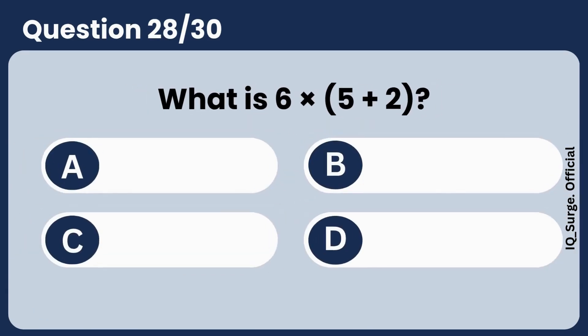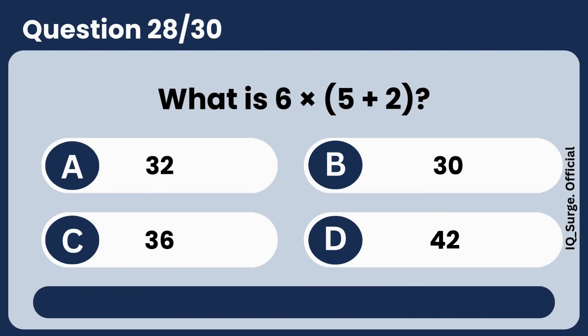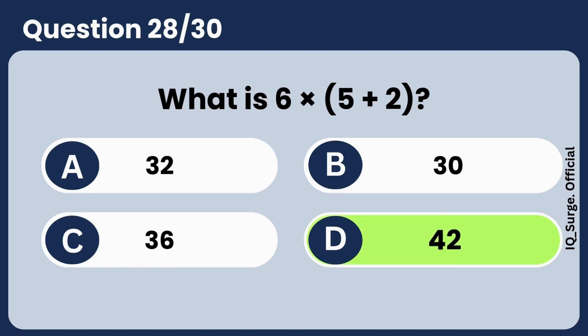What is 6 times open parenthesis 5 plus 2 close parenthesis? Answer D, 42.